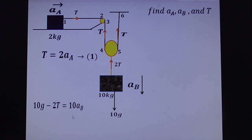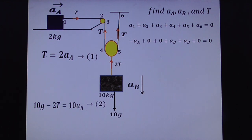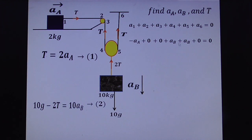To get a third equation, use the constraint concept. Writing a1 + a2 + a3 + a4 + a5 + a6 = 0: a2, a3, and a6 are zero (fixed points). The movable string at points 4 and 5 gives +A_B and +A_B. For point 1 (mass A moves up, so length decreases), we write −A_A.